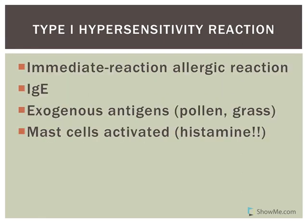The first type, Type 1, is also referred to as an immediate allergic reaction. The response time is typically 15 to 30 minutes, though it can sometimes be up to 10 to 12 hours, but most times it's really immediate. This is what people think of when they're allergic to bees, pollen, or grass — all exposures to an exogenous antigen from the external environment.